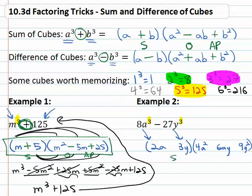Just have to fill in the signs with SOAP, same sign as the problem minus, opposite sign as the problem plus, and the last one's always positive. We have our final solution, (2a - 3y)(4a² + 6ay + 9y²).